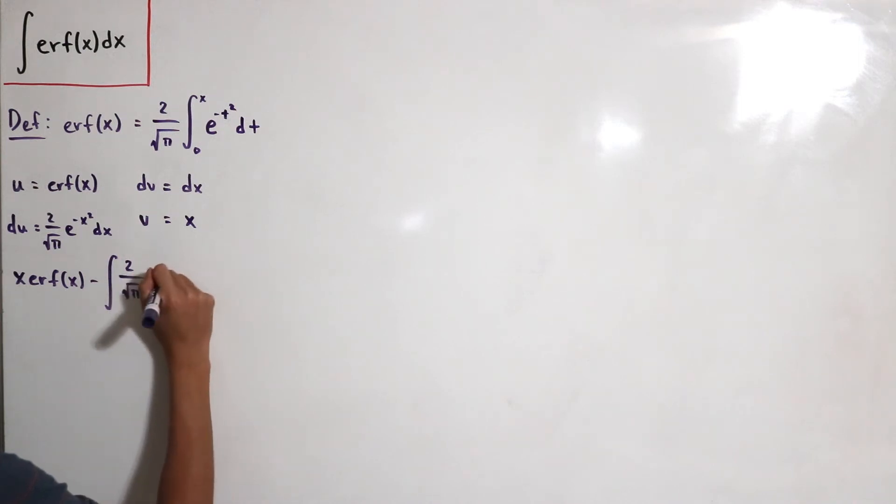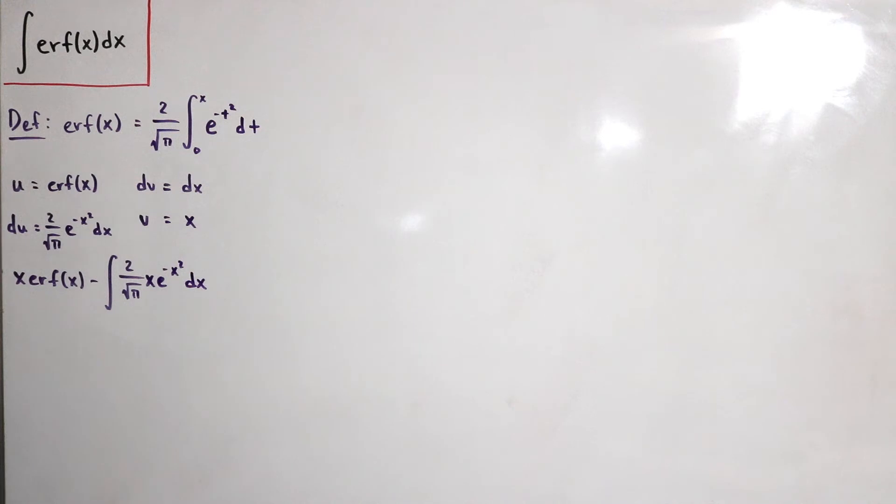So then this is just 2 divided by square root of π, x, and then e to the negative x squared dx. Now 2 over square root of π is just a constant so I can move that outside.